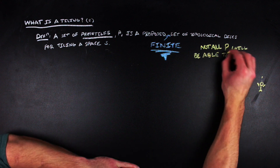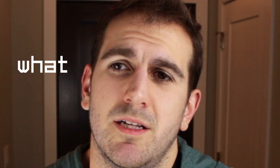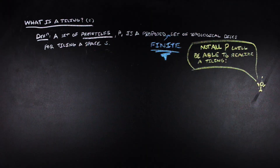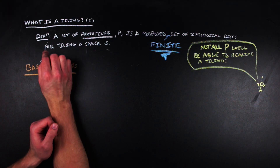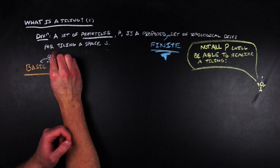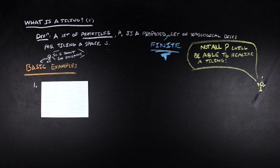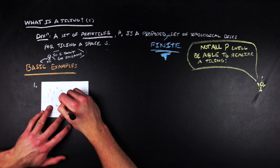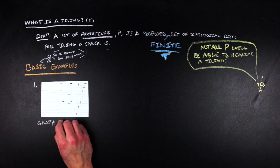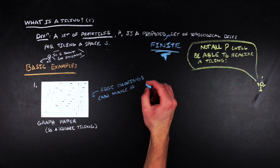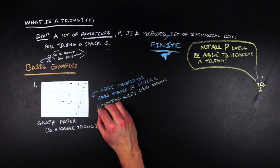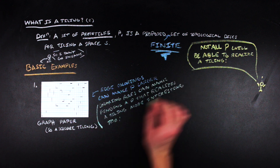I'll save the difficulty of that problem for another video. Now that we've talked about prototiles, let's look at some basic tiling examples. If you have ever looked at a piece of graph paper, then you have seen a tiling by squares. We can make the tile set more complicated by allowing certain edge colorings, and you can also base matching rules on these colored tiles, which makes the problem of tiling the space with these squares harder than trivial.